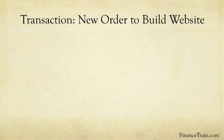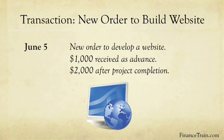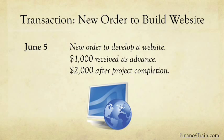David takes up a new order to build a website for a restaurant near his office. David will provide the service of designing and developing the website. In exchange for this service, David will be paid money. He received an advance payment of $1,000 now and will be paid the rest after the project is completed. This is a transaction as it involves exchange of service for money — the website is received and money is given.